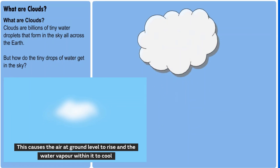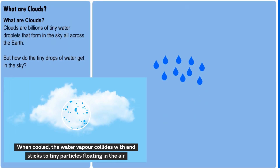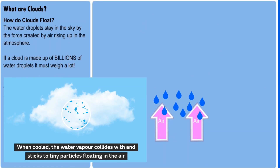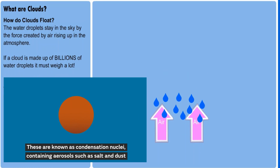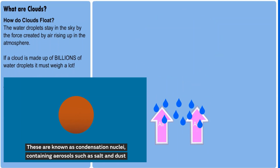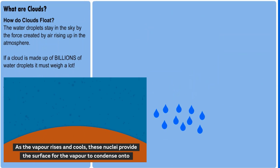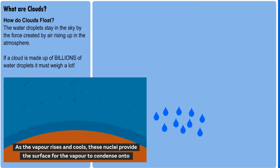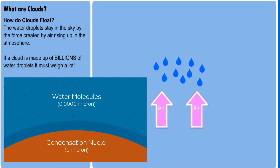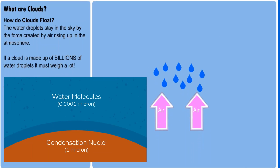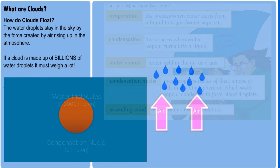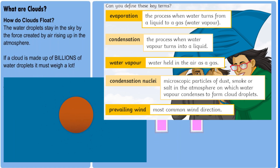As the air rises it begins to cool, because typically we lose about 1 degree centigrade every 100 meters we gain in elevation. The water vapor begins to cool and then condenses onto tiny little particles floating in the air. These can be pollen, dust or even pollution particles. These particles are called condensation nuclei and they provide the surface for the water vapor to condense onto.